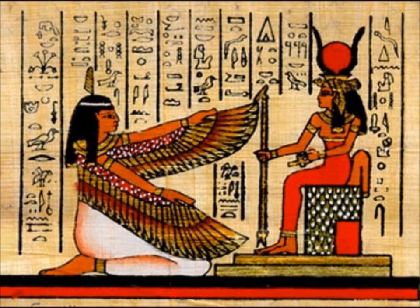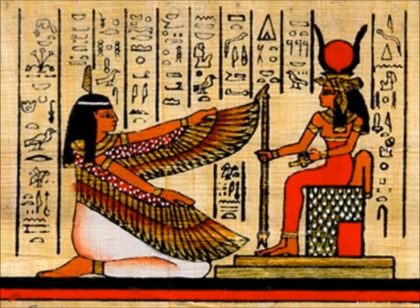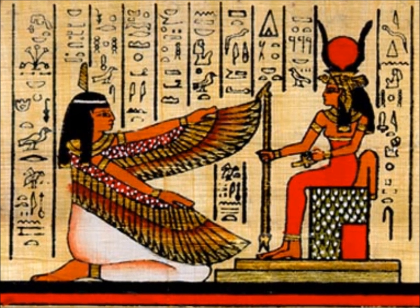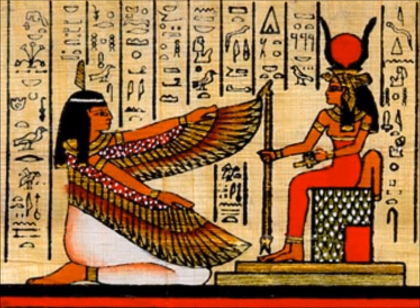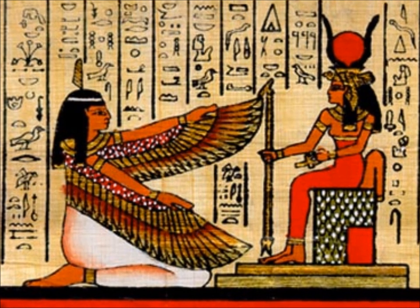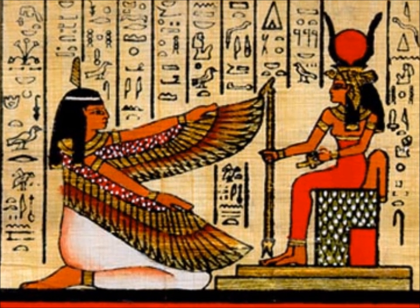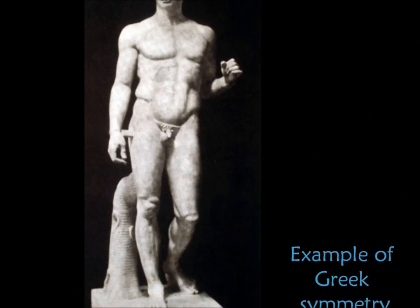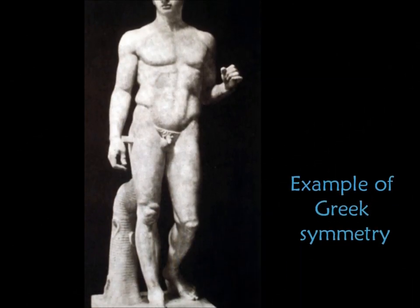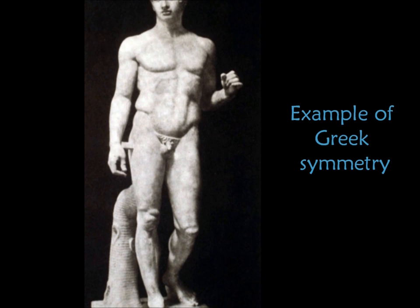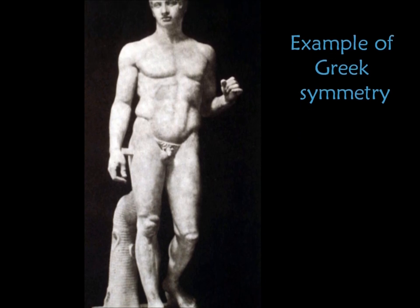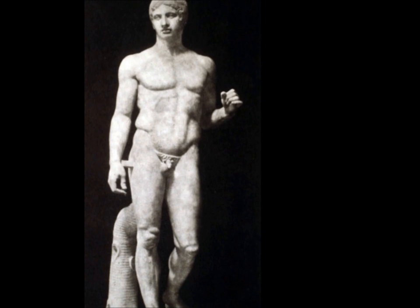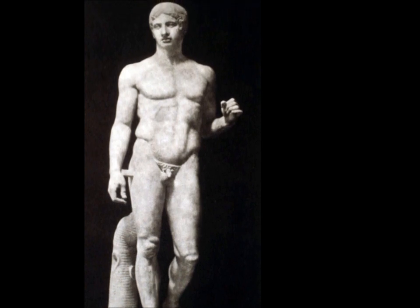The depiction of Ma'at with an ostrich feather shows how the Egyptians perceived the aesthetic world. Art should be balanced and congruent. It should show proportion. That is why this piece showing Ma'at matches the art techniques of the ancient Egyptian time period. It impacted the Greeks' art because they portrayed the absolute symmetry seen in the rendition of Ma'at. This piece further demonstrates that the ancient Egyptians believed in proportion in art and color for beauty intertwined.